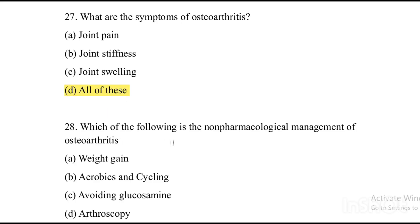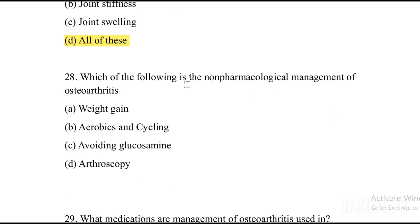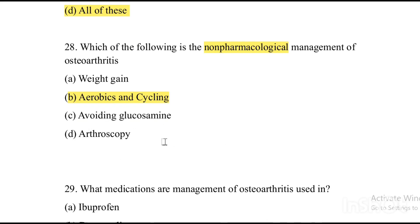Next question: Which of the following is non-pharmacological management of osteoarthritis? Option A: weight gain. Option B: aerobics and cycling. Option C: avoiding glucosamine. Option D: arthroscopy. The answer is Option B — aerobics and cycling is non-pharmacological management. The remaining options are pharmacological management.